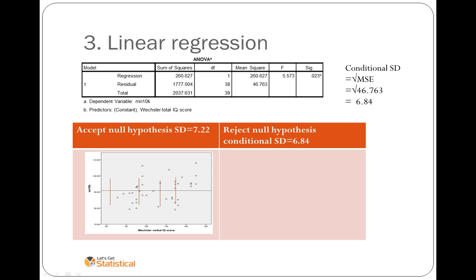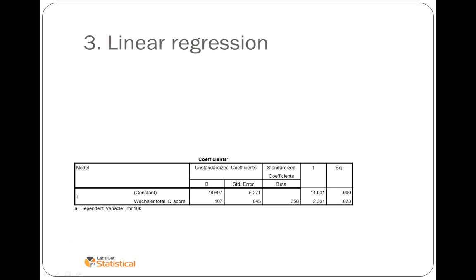If we reject the null hypothesis and we think a straight line is the best situation, as we move along verbal IQ score, the variation either side of that line is going to be 6.84, but it will have a different mean depending on Weschler verbal IQ score. This is the use of conditional standard deviation.